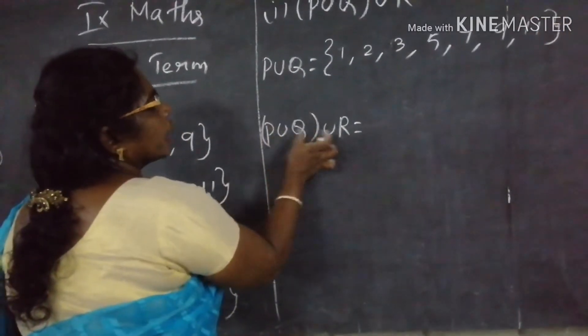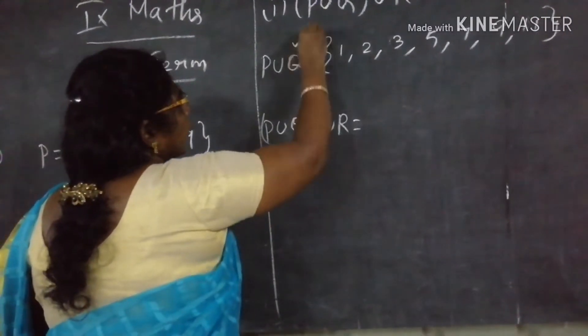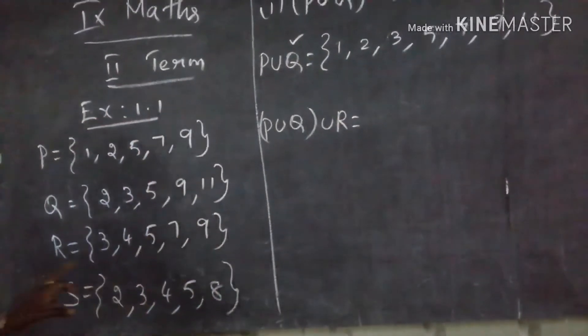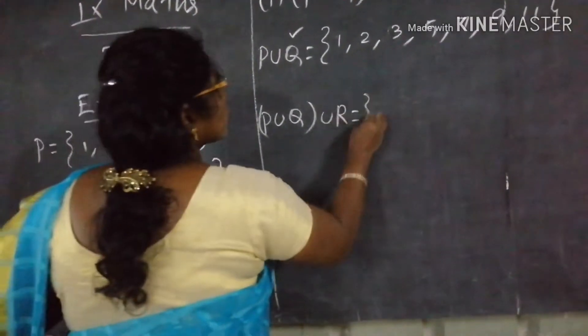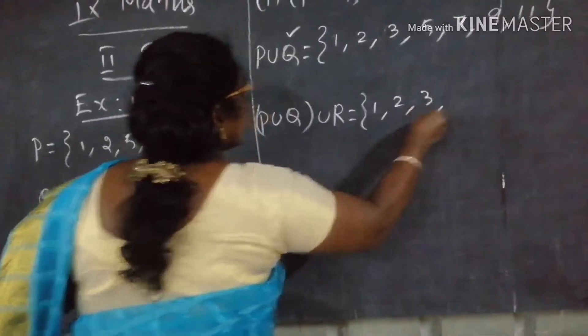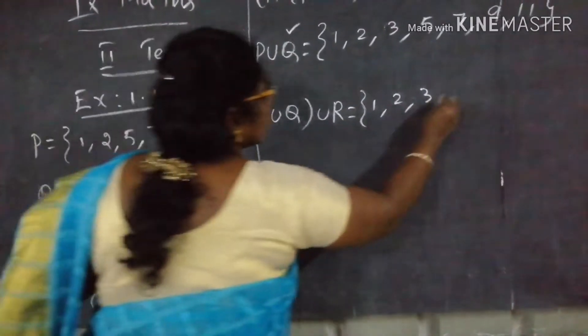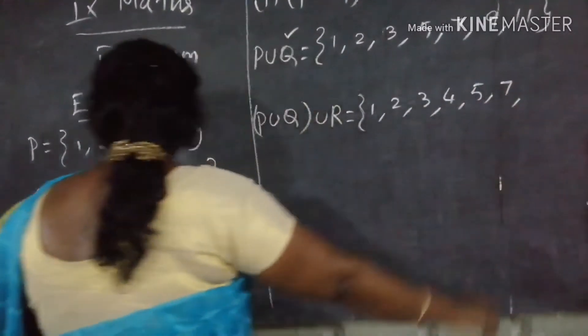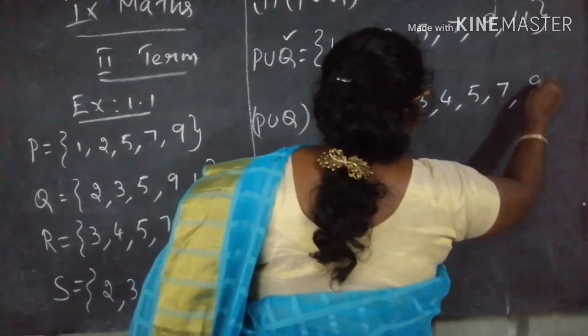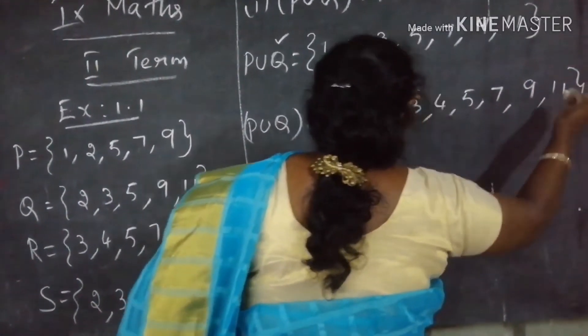P union Q union R. This is P union Q, this is P union Q, this is P union R union R. 1, 2, 3, 4, you get it, 4, 5, 7, 9, 11, 10, 11.